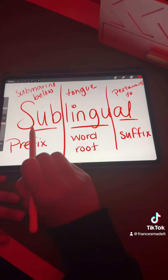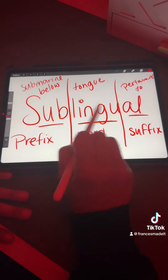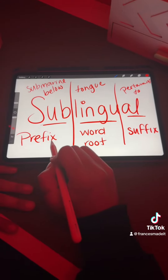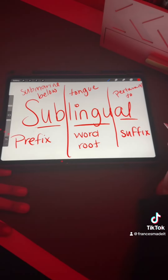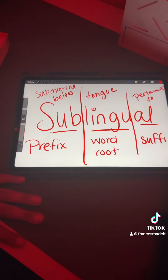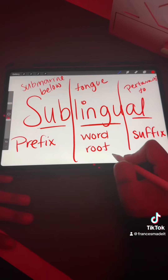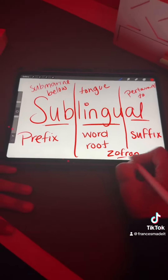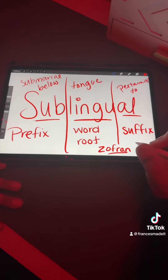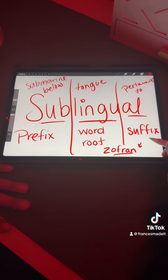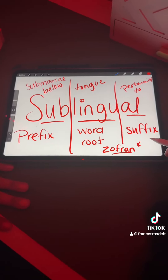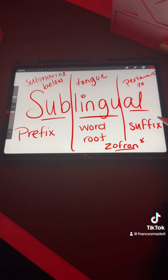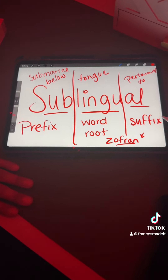So sublingual means it's below the tongue. Medication is typically administered sublingually. That means you're taking that medication — something like Zofran, which is a disintegrating medication you put below your tongue, and it will dissolve. That is a proper way of administering certain medications.